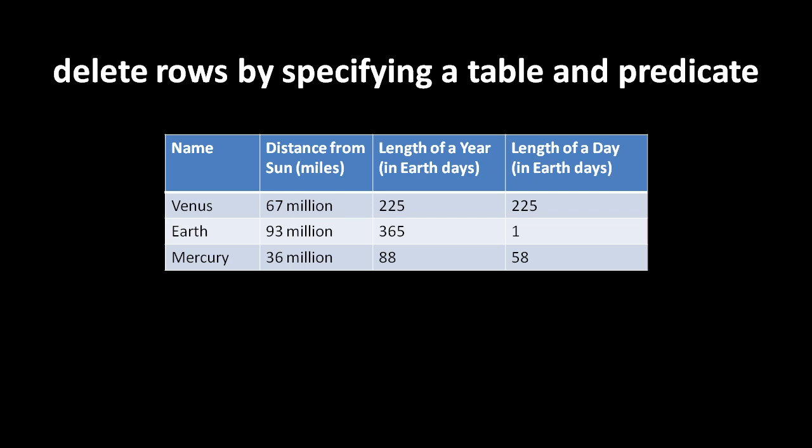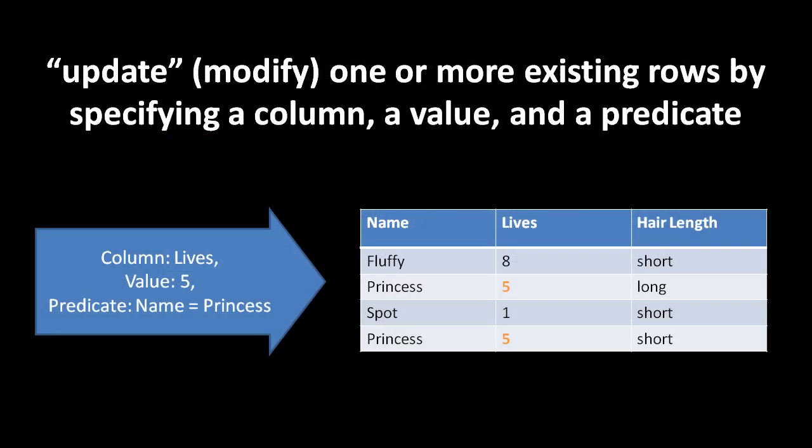If we want to change data in existing rows, this is called an update operation. First we specify which rows we want to update with a predicate, and then we specify which column or columns to update with a new value. Here we're updating the column 'lives' with the value five for all rows where the name value is 'princess', so both of those rows now have the value five in the lives column.